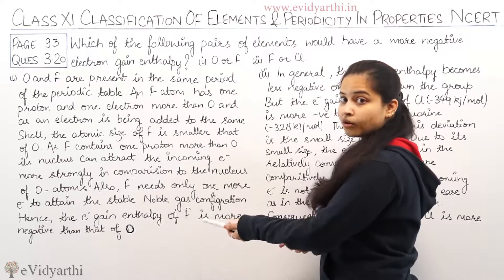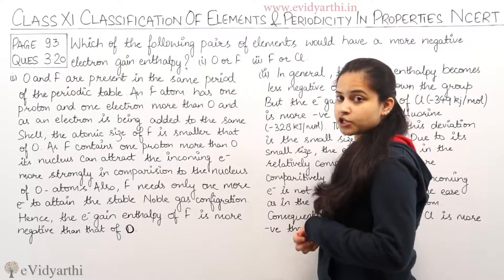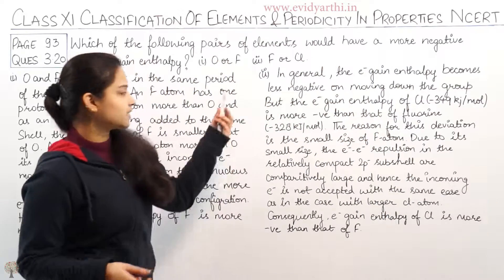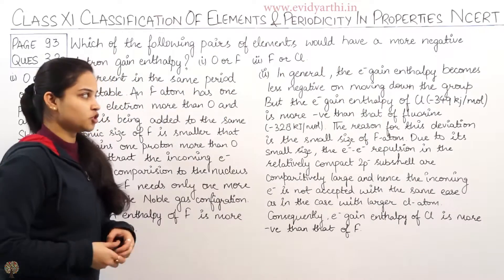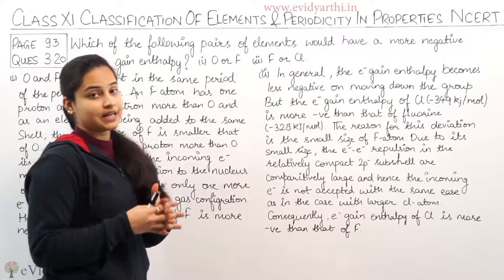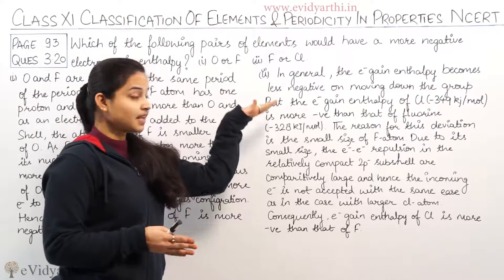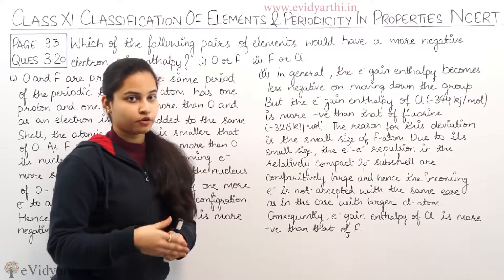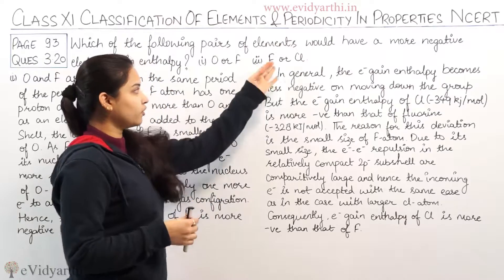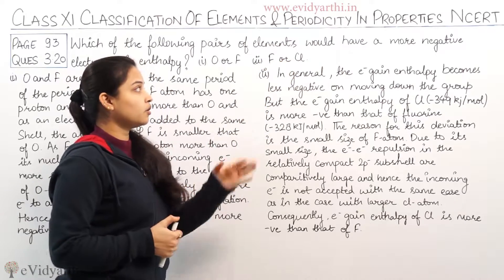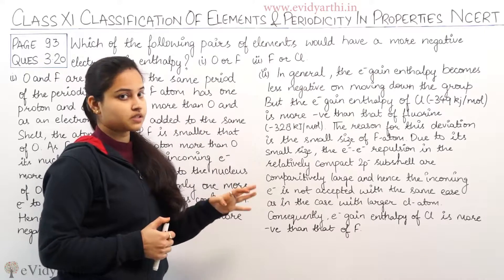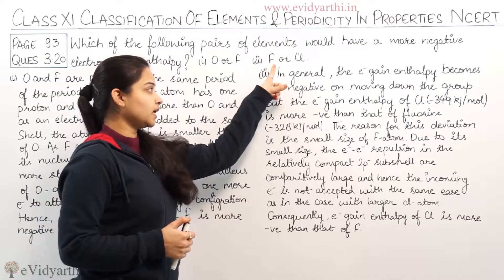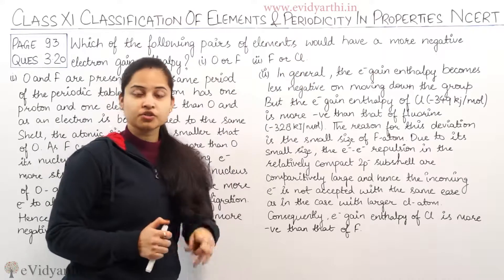Moving on to the second part: in general, electron gain enthalpy becomes less negative on moving down the group. Fluorine and chlorine belong to the same group — the halogen family — with fluorine above and chlorine below.